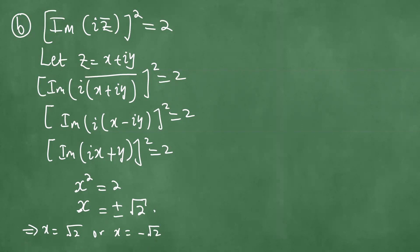So this describes two points, meaning x equals the square root of 2 or x equals minus the square root of 2.